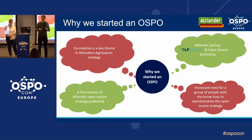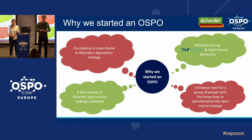This was further strengthened by the first open source strategy that was drafted, and also Alliander's decision to join LF Energy as a member. LF Energy is an open source body focused on the power system sector, hosted within the Linux Foundation. Its goal is to bring companies and communities together that work on digital solutions in the energy sector.